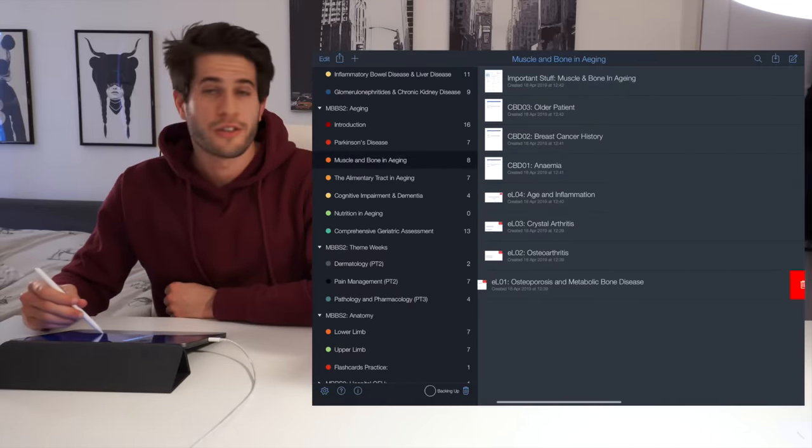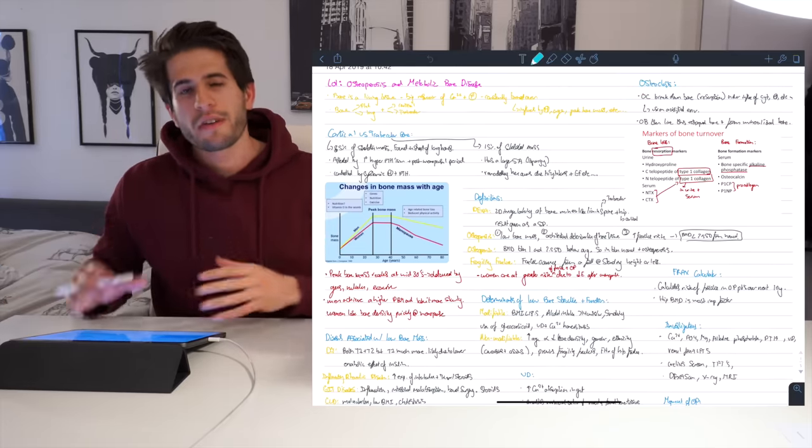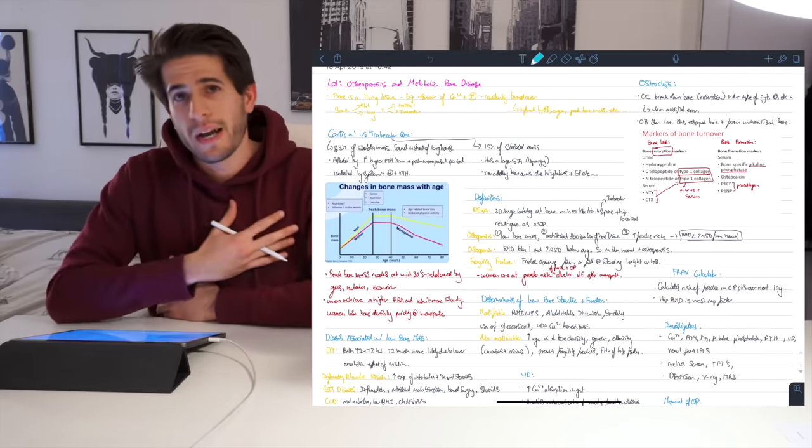If you go to the important stuff you'll see that I have learned lecture 01 osteoporosis and metabolic disease which corresponds with lecture 01 over here. This lecture over here that you see is a very typical example of one of my lecture notes.